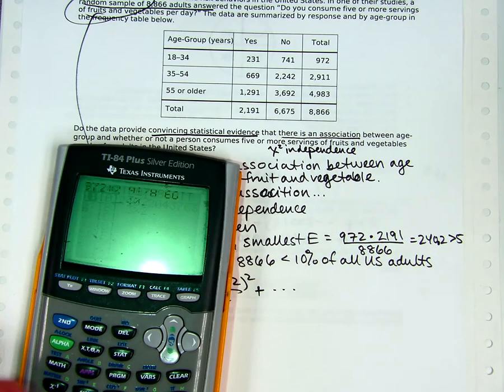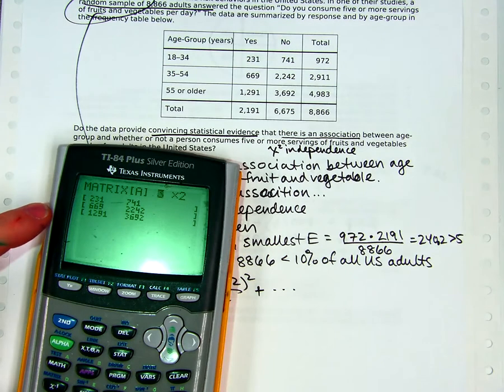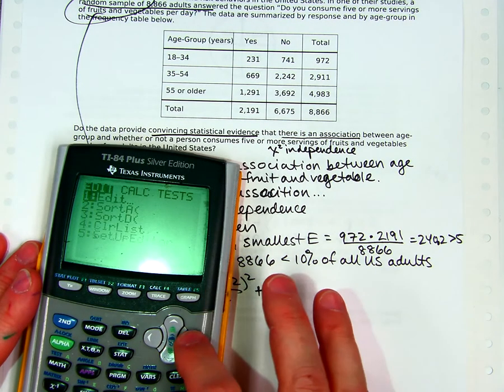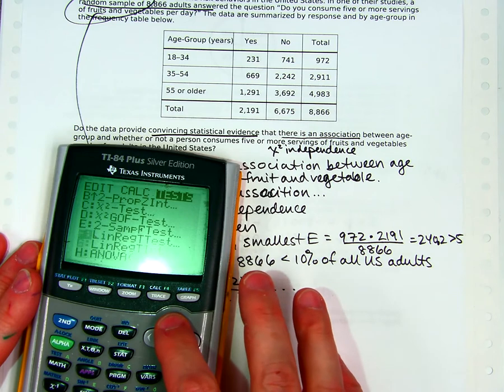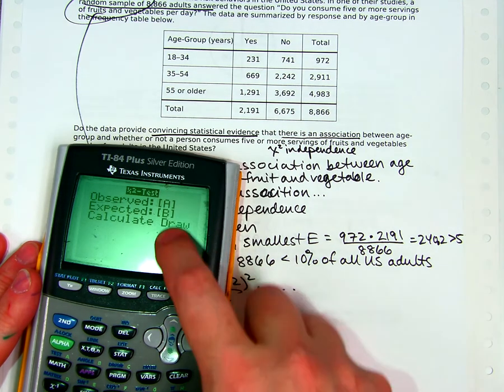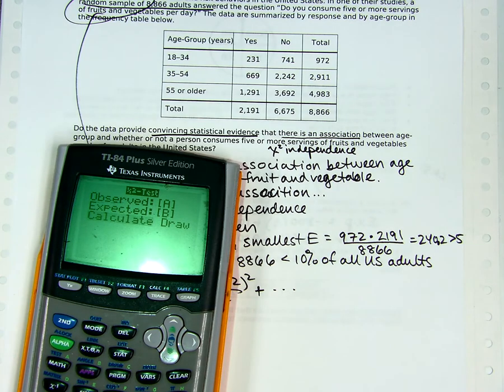Remember with this kind you put it in a matrix. So second matrix. And I already put the data in. This is the same as what's in the table. You can check my work if you like. And then stat tests and a chi-squared test that's not GOF, not goodness of fit. And leave those like they are. Where the calculator will fill in table B, or matrix B I mean with the expected values.